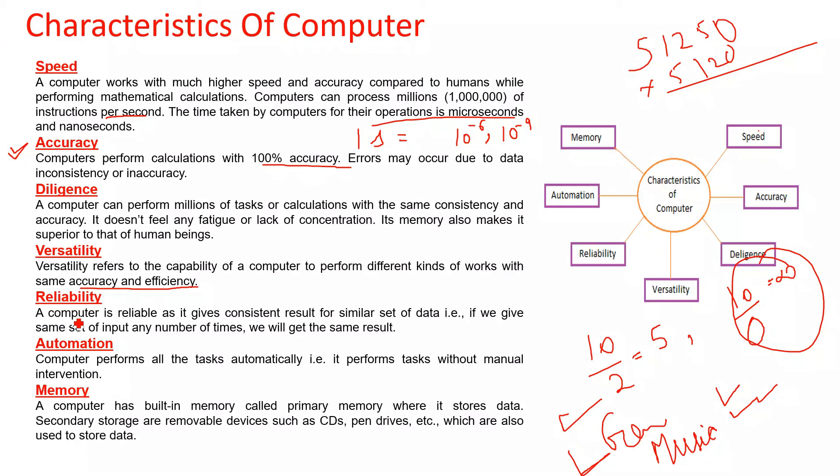Reliability. A computer is reliable as it gives consistent results for similar set of data. That is, if you give the same set of input any number of times, you will get the same result. For example, 5 plus 2 always equals 7, so the result is reliable.